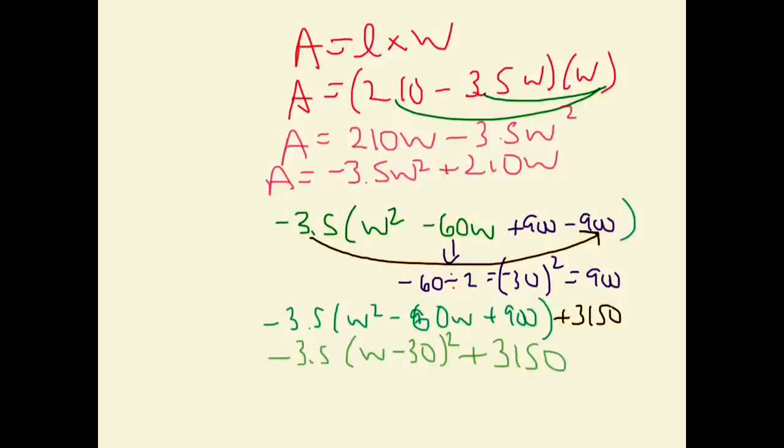So now I'm going to look at my expression and identify the vertex. So the vertex is positive 30 and 3,150. So this is the maximum area. And my variable, again, was W. So that means that is the width.